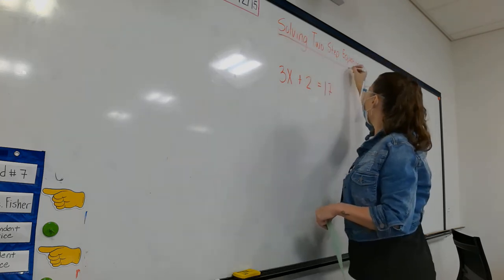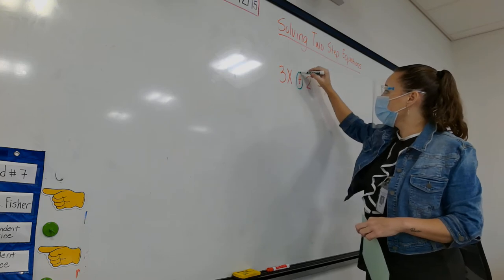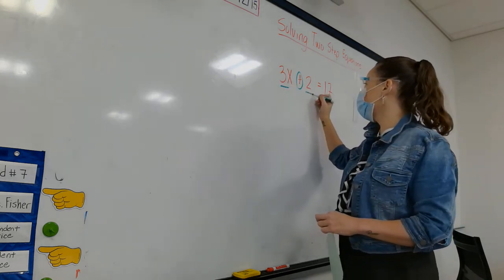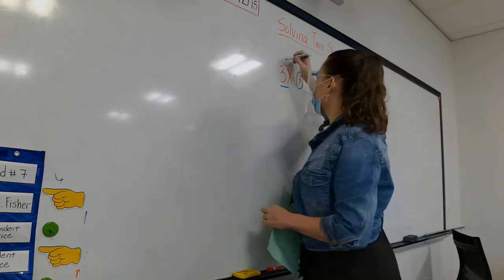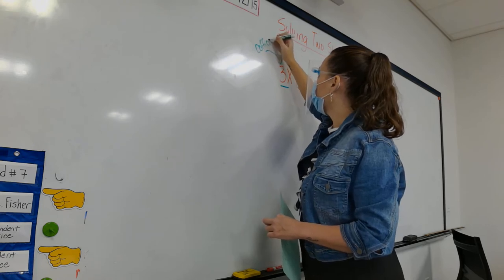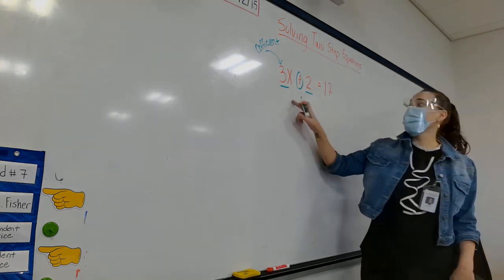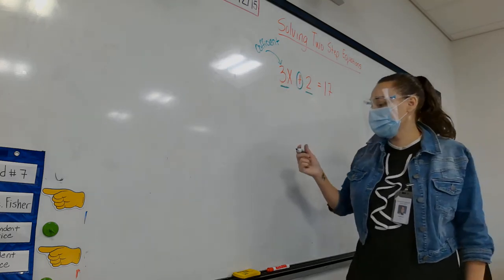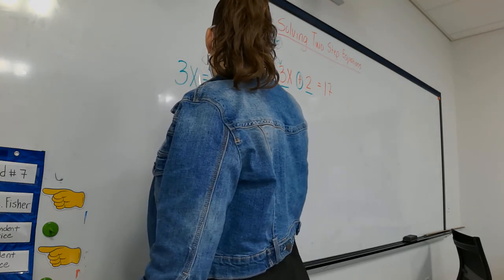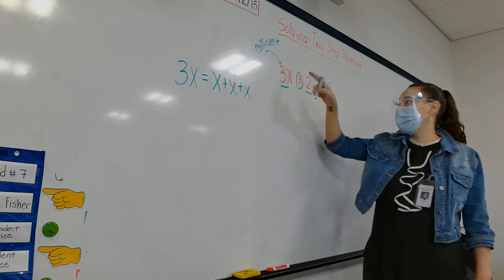From all last week you should remember — this is your operation. Your operation separates terms, so we have one term, two terms. This is a coefficient. The coefficient tells you how many x's I have. So I have three x's. Three x is the same thing as saying x plus x plus x. The coefficient is simply telling you how many of those x's you have.